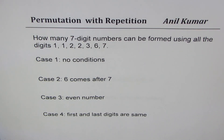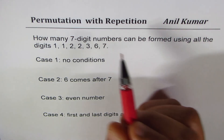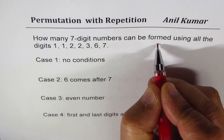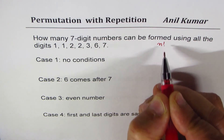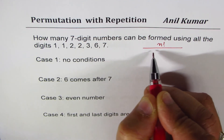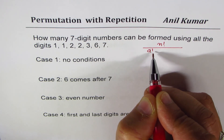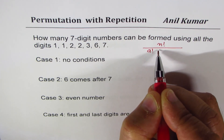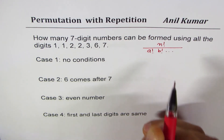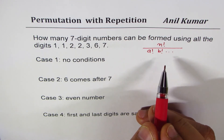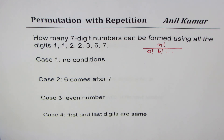I'm Anil Kumar and in this video I'll discuss at length permutations with repetition, or identical elements. Whenever we have n distinct objects and if a of them are repeated or identical, we divide by a factorial; if b are repeated, divide by b factorial, and so on. That is the general formula which will be applied in this video.